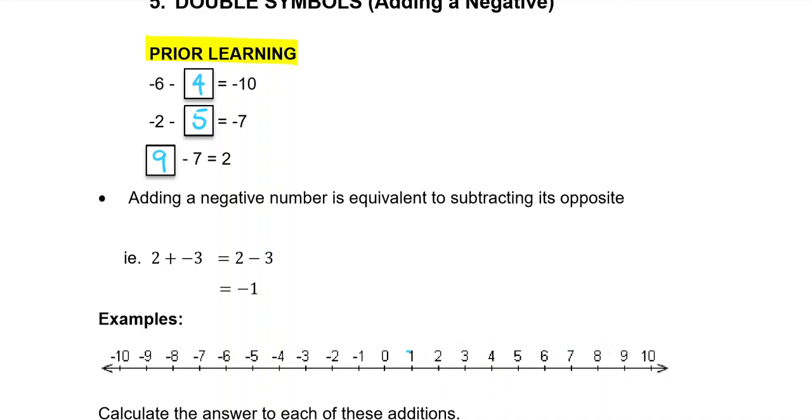Okay, so today's work is all about this dot point here. It says adding a negative number is equivalent to subtracting its opposite. Now that sounds a little bit confusing, but what we're going to have in our questions is two symbols next to each other: a plus and a minus sign. When you see those two symbols together I want you to circle them, and a plus and a minus sign together will always be the same as subtracting just the one minus sign.